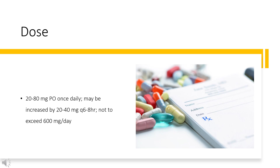SC furosemide only: Indicated for treatment of congestion owing to fluid overload in adults with NYHA class 2-3 chronic heart failure (CHF). On-body infuser with pre-filled cartridge is pre-programmed to deliver 30 mg SC over the first hour, followed by 12.5 mg per hour for the subsequent 4 hours, for a total of 80 mg SC over 5 hours. Not for chronic use; replace with oral diuretics as soon as practical.